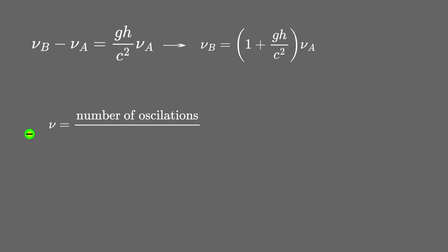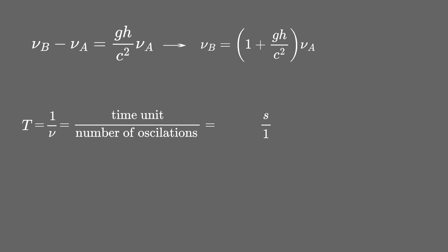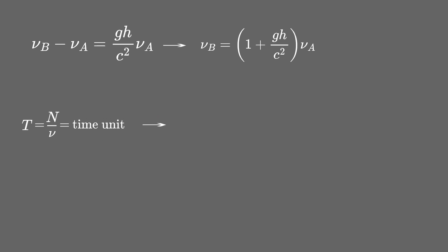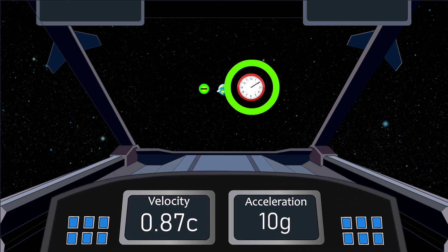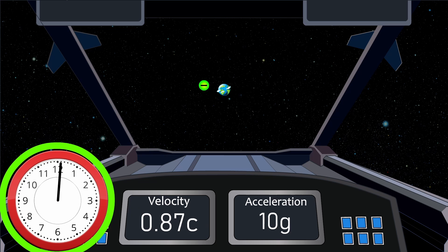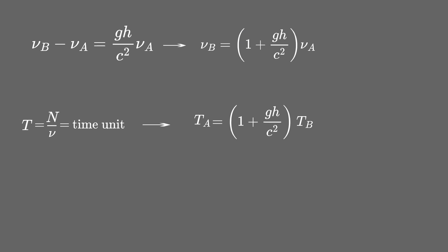The equation that tells you how the frequency of light changes due to a uniform gravitational field has the original frequency of the source and the frequency at the bottom of the field. Rearranging it tells you by how much the frequency increased compared to the original. Since frequency is oscillations per unit time, inverting gives the time period per oscillation. Multiplying by the number of oscillations during the acceleration gives a time interval on each clock — and since the number of oscillations must be the same, the elapsed time on the A clock for observer B during acceleration is much bigger than the elapsed time on the B clock.